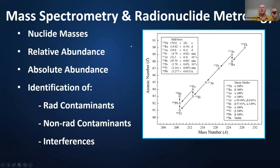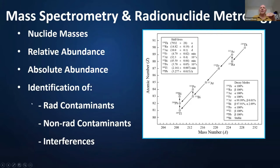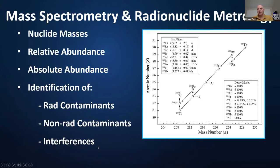What is the complementary nature of mass spectrometry and radionuclide metrology? This includes nuclide masses, relative abundance of radionuclides of the same or different elements, and absolute abundances where you don't have to be dependent on half-life. Mass spectrometry can also be very important for identifying radioactive contamination in MS samples, as well as long-lived contaminants or contaminants with coincident energies in radioactive measurement samples. Interferences on both sides — in radioactivity measurements and in mass measurements — can be alleviated through these complementary methods.